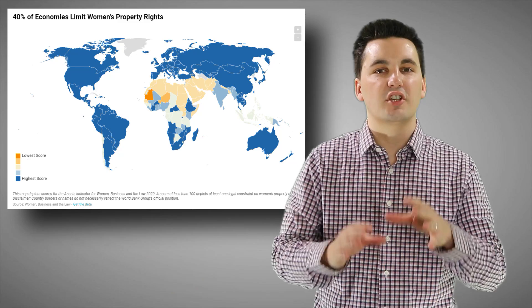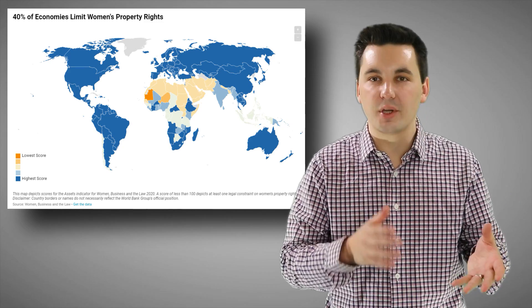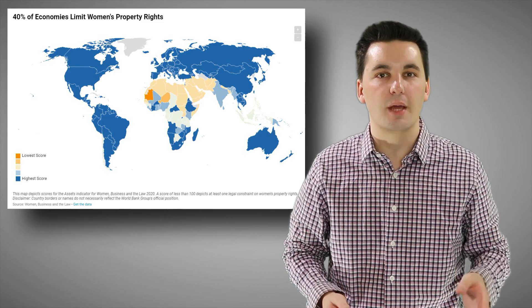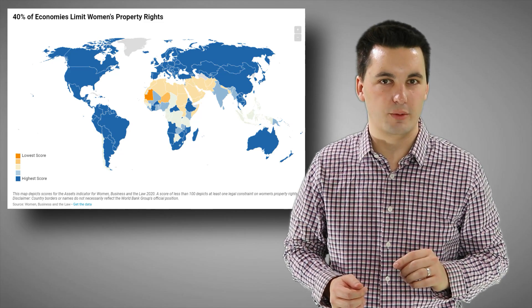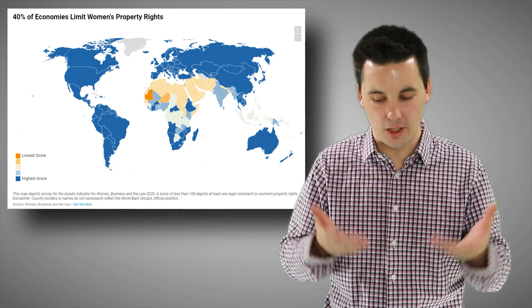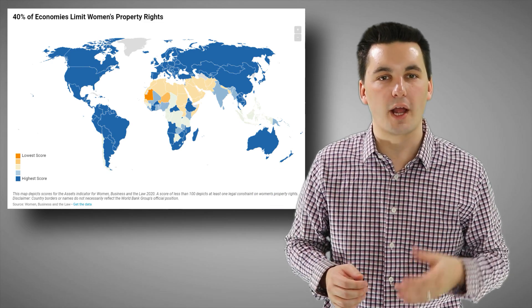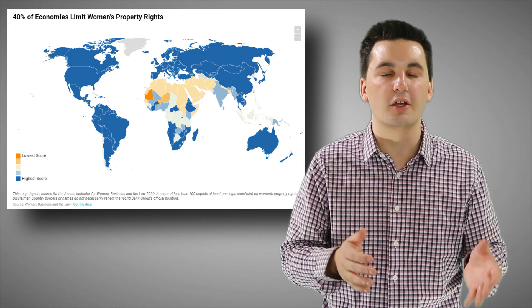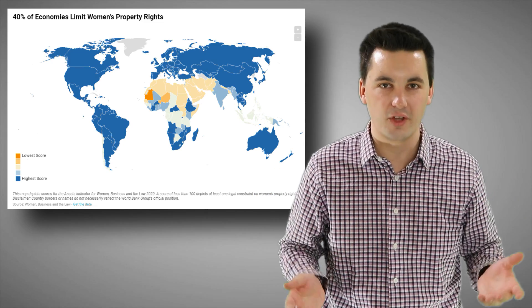Unfortunately, we also see that women are more likely to be malnourished as more of the caloric intake is prioritized for men. They also have less political representation and are less likely to be allowed to own land. As countries continue to develop both economically and socially and move further down the demographic transition model, we can start to see that land ownership for women increases, and women also gain more economic, political, and social opportunities in society.